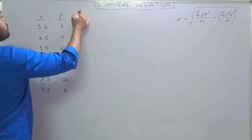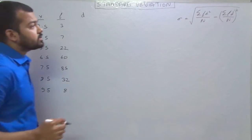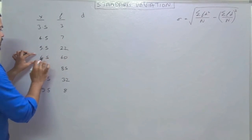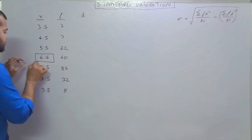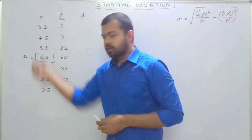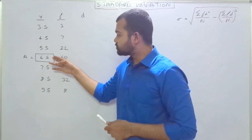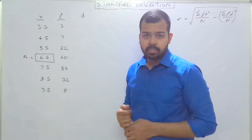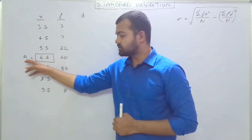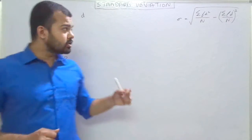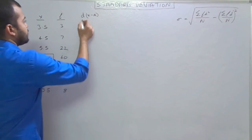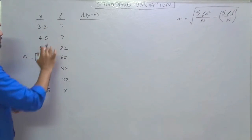Now we have to look at the demand of the formula. We need to calculate the deviations. First, we need to identify an assumed mean. Here 'A' means assumed mean. In statistics we can assume any number, but for convenience we are selecting 6.5, which is the middle value. You can assume any value and the answer will come out the same. So A (assumed mean) = 6.5. Now to calculate deviations we do x minus A.